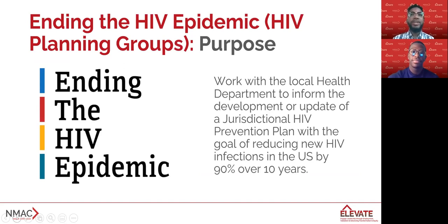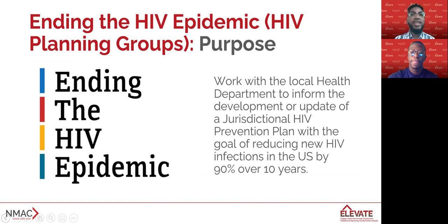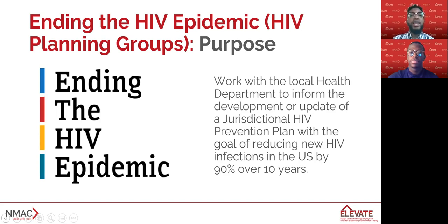In February of 2019, the President announced the Ending the HIV Epidemic (EHE) in America initiative. The initiative seeks to leverage powerful data, tools, and resources to reduce new HIV infections by 90% over the next 10 years. The EHE initiative focuses on 48 counties, including San Juan, Puerto Rico, Washington D.C., and seven states with a substantial rural burden. The goal of the EHE is to provide a more coordinated HIV planning effort across funding streams and agencies. Each jurisdiction has at least one HIV planning group tasked with working with the local health department to inform the development or update of the health department's jurisdictional HIV prevention plan that will contribute to the reduction of HIV infection in the jurisdiction, aligned with the national HIV/AIDS strategy.